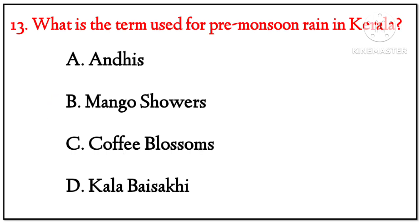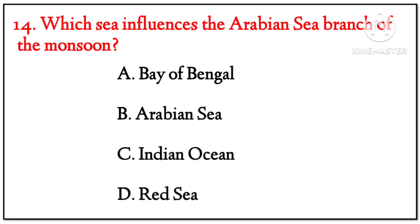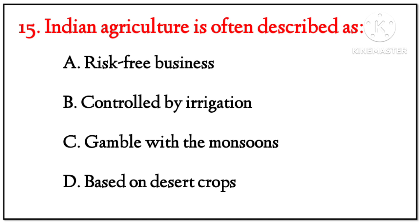(13) What is the term used for pre-monsoon rain in Kerala? Options: Andhi, Mango Showers, Coffee Blossoms, Kerala Rain. Answer: Mango Showers. (14) Which sea influences the Arabian Sea branch of the monsoon? Options: Bay of Bengal, Arabian Sea, Indian Ocean, Red Sea. Answer: Arabian Sea.